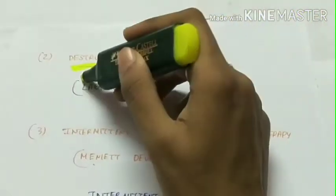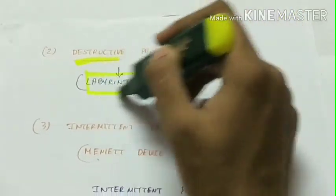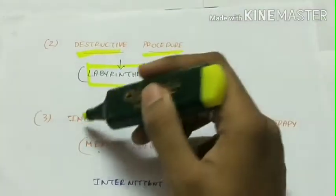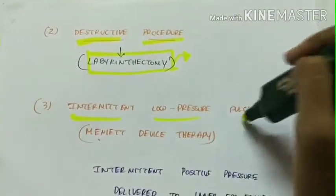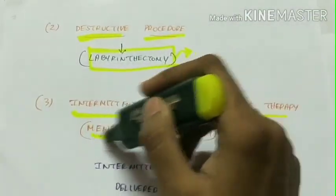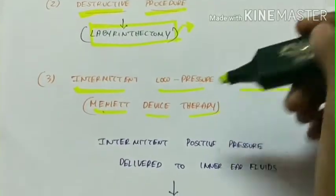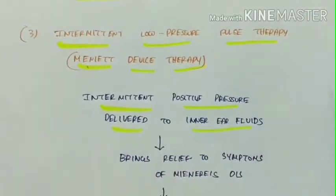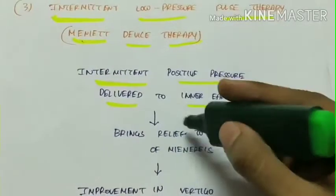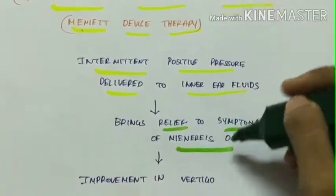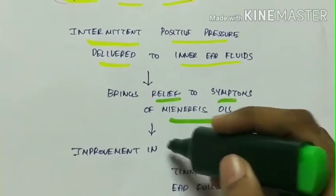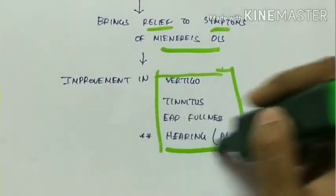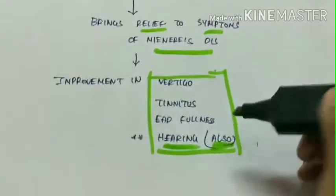Next, destructive procedure in surgery which includes labyrinthectomy. This is performed when hearing cannot be restored. Third is intermittent low pressure pulse therapy called as Meniere device therapy. Intermittent positive pressures are delivered to the inner ear fluids which brings relief to the symptoms of Meniere's disease. So there is improvement in vertigo, tinnitus, aural fullness, and hearing also.